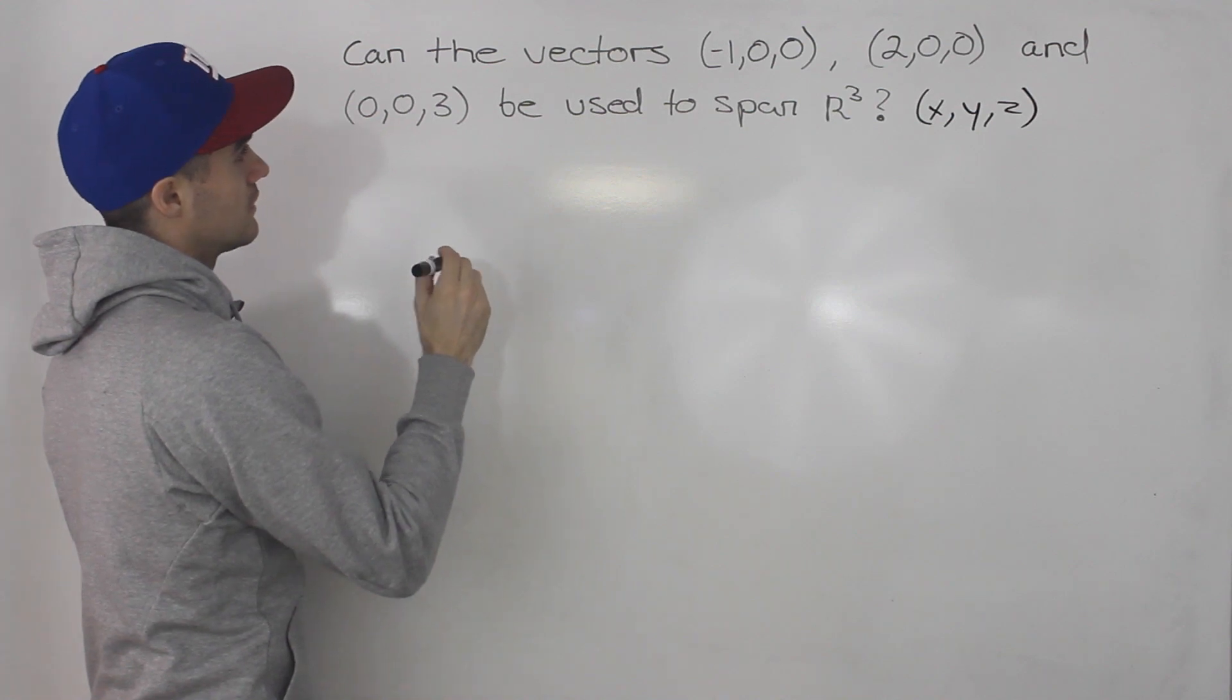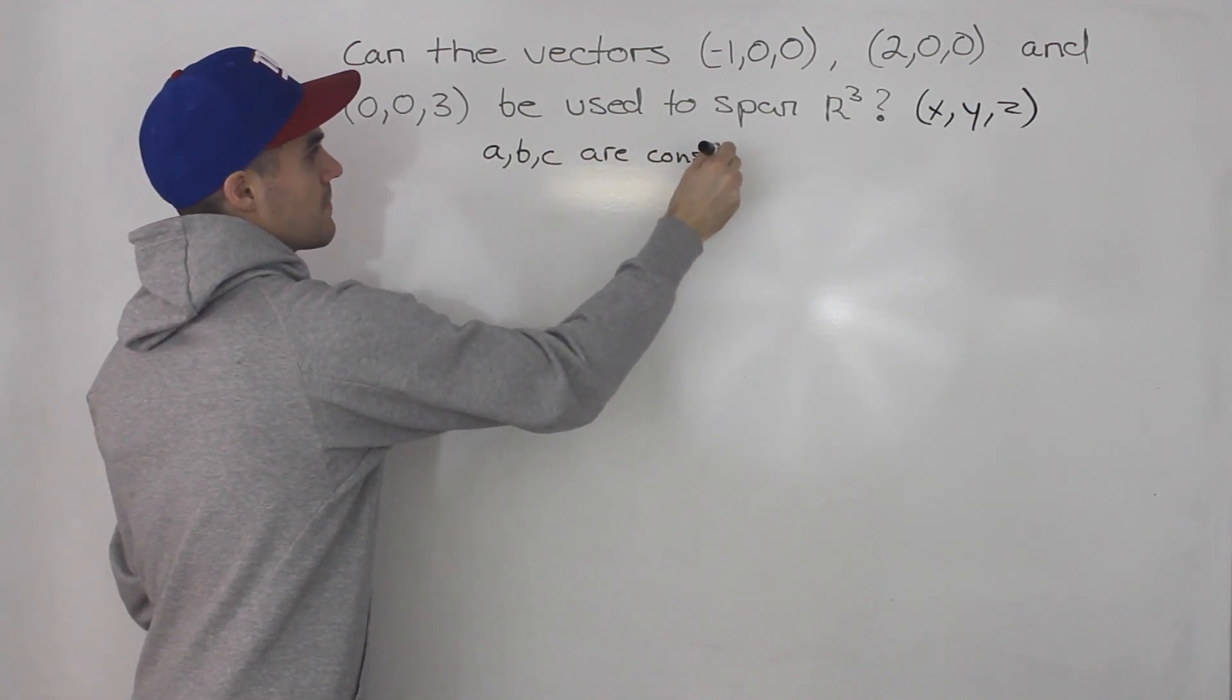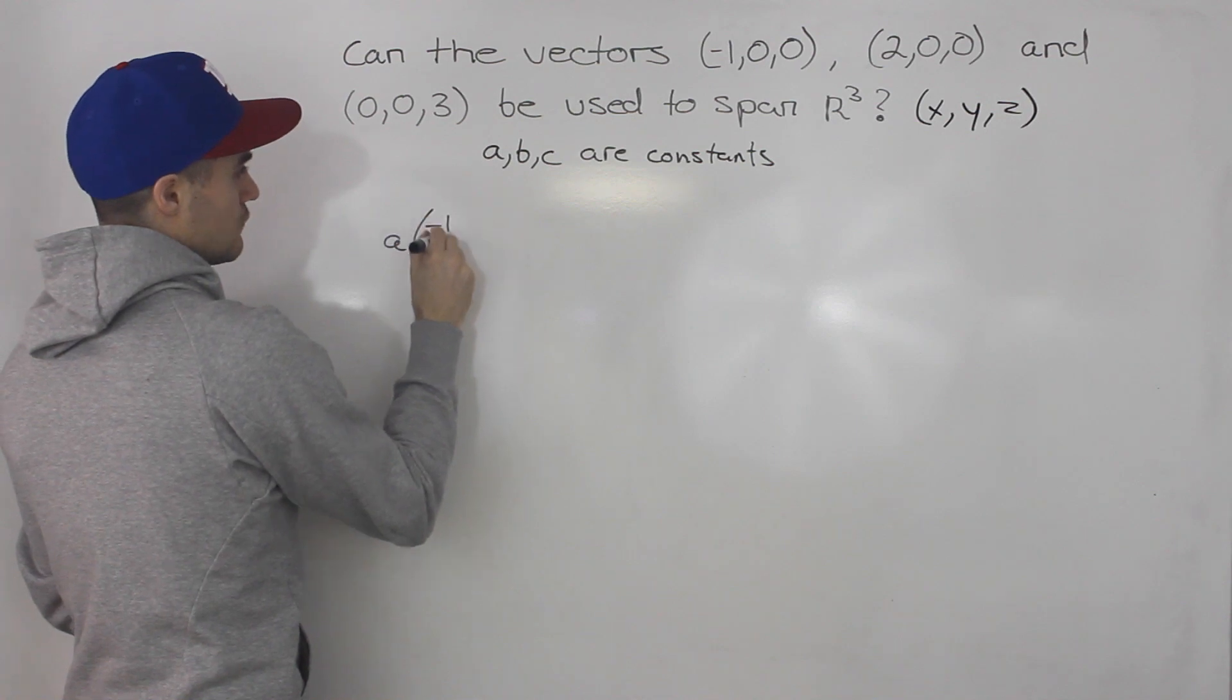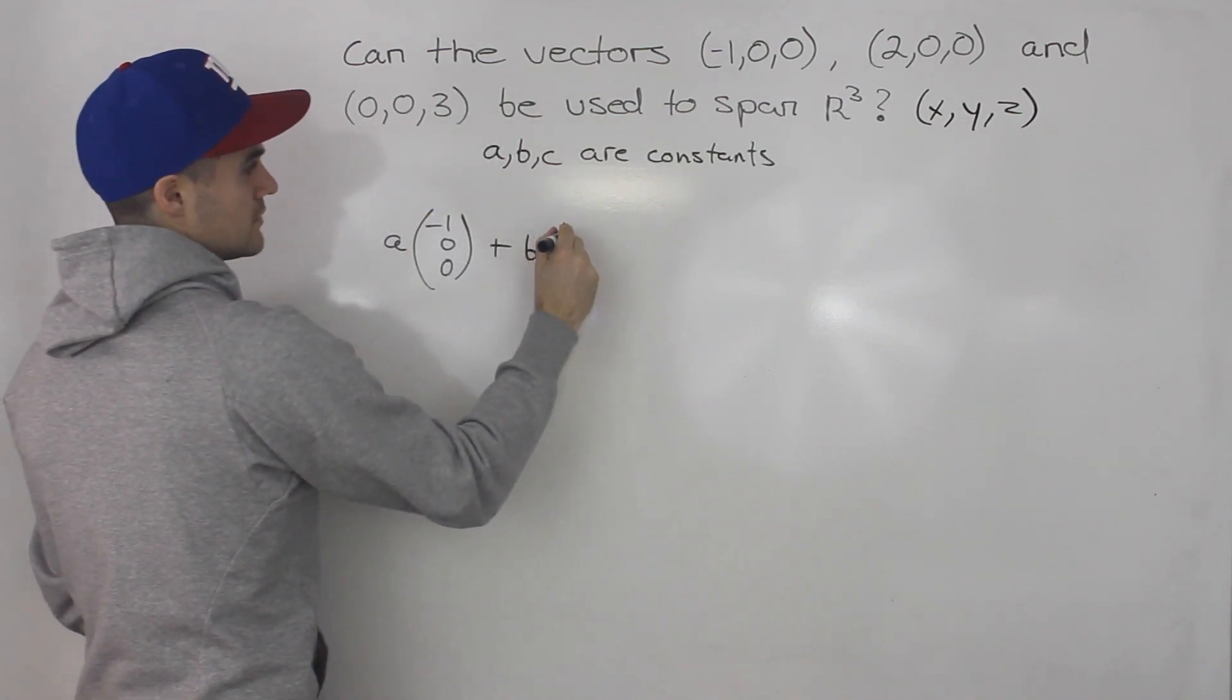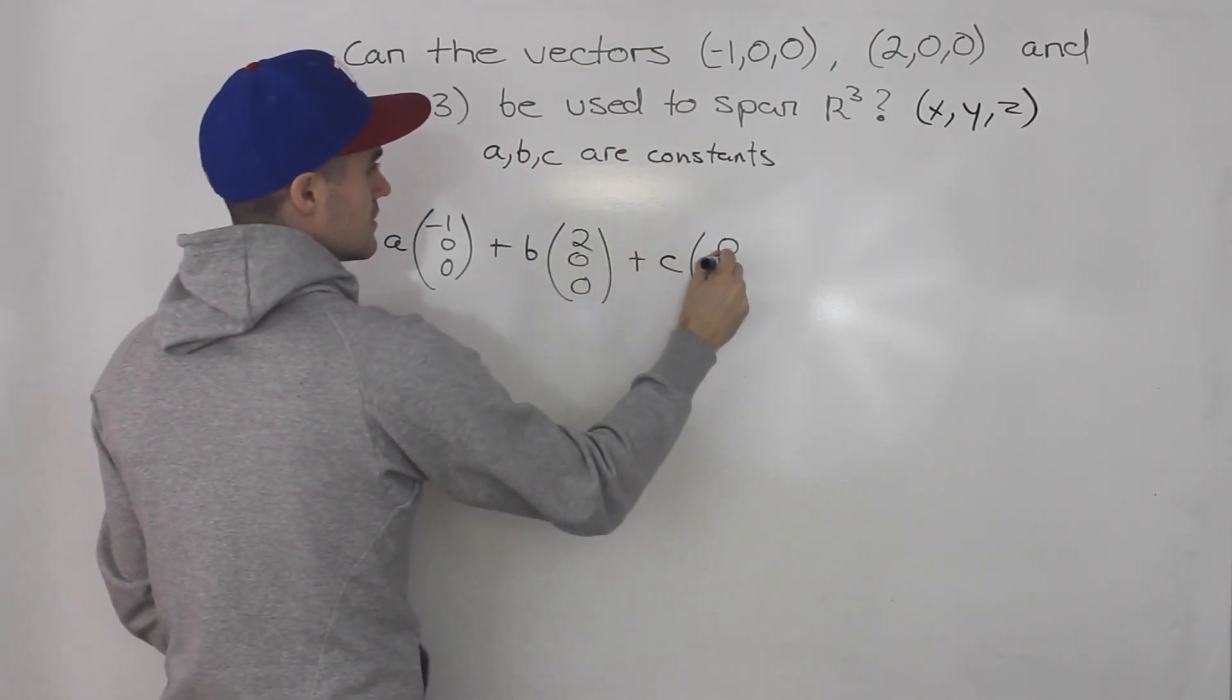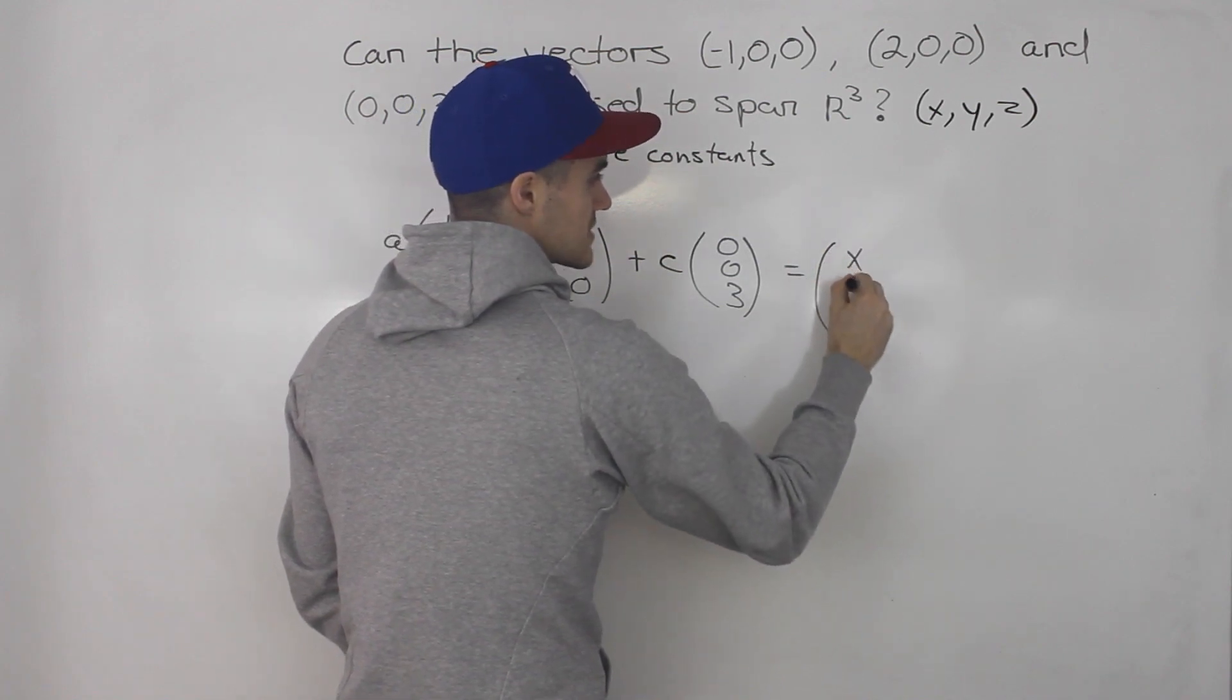And to show this a little bit more clearly, let's say that a, b, c are constants. So can we take the first vector multiply it by constant a, so we got (-1,0,0), plus b times the second vector (2,0,0), plus c times the third vector (0,0,3)? Can we get constants a, b, and c to give us any vector (x,y,z)?